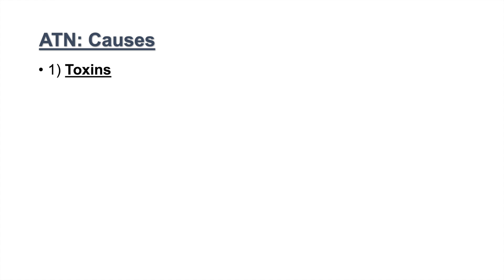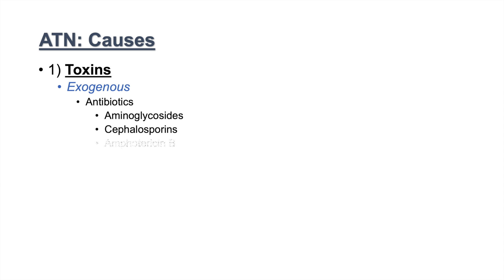The causes of acute tubular necrosis fall into two categories: nephrotoxins and ischemic injury. With regards to toxins, we break them into exogenous and endogenous categories. Exogenous toxins that can cause ATN include antibiotics such as aminoglycosides, cephalosporins, and amphotericin B — all of which can cause a toxic nephrotoxic injury.